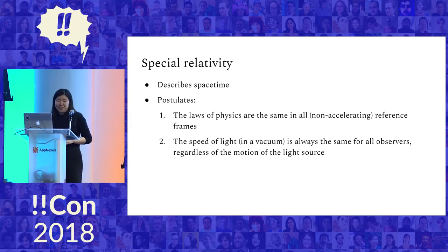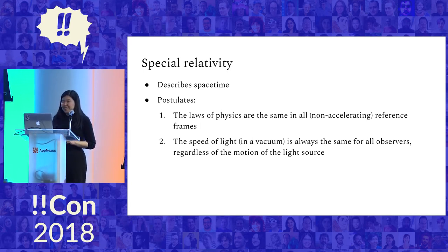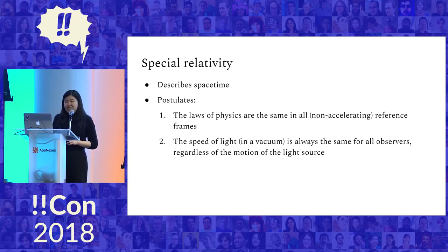The first postulate is that the laws of physics are the same in all non-accelerating reference frames — it's basically a statement about symmetry. If you're on a train and it's moving and your friend is on the platform, from your friend's point of view the train and you are moving forward. But from your perspective, you and the train are both still, while your friend on the platform is moving backward. Neither of you is more correct than the other, because both reference frames are equivalent and neither is privileged.